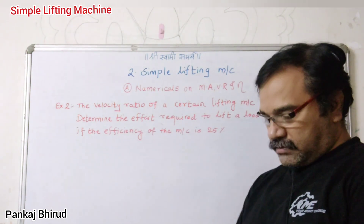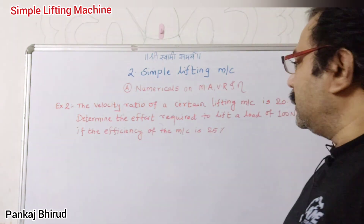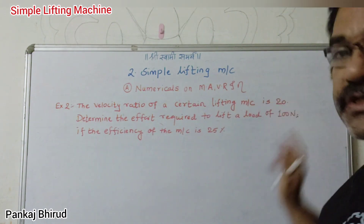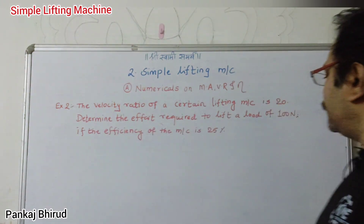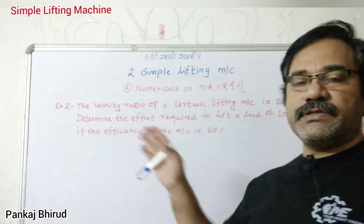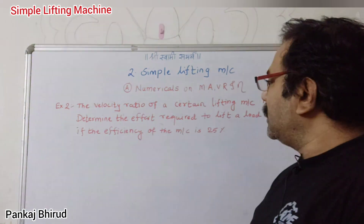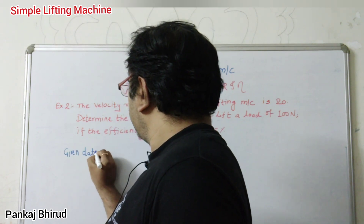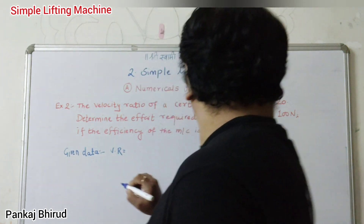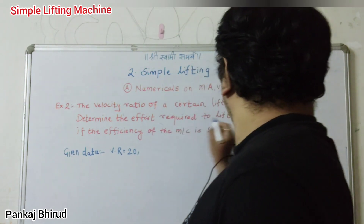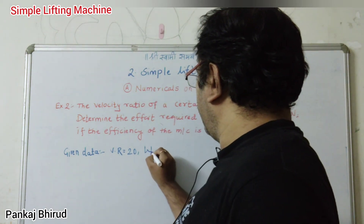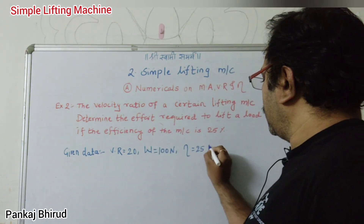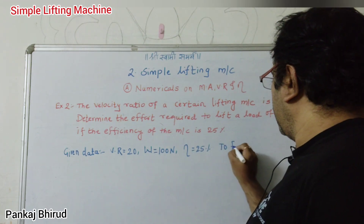Here we have a similar type of example. The velocity ratio of a certain lifting machine is 20. Determine the effort required to lift a load of 100 Newton, if the efficiency of the machine is 25%. Given data: VR = 20, W = 100 Newton, efficiency = 25%, and we have to find the effort P.